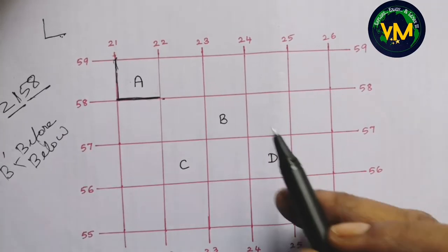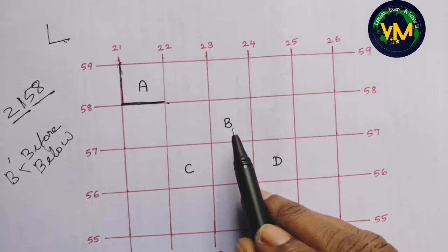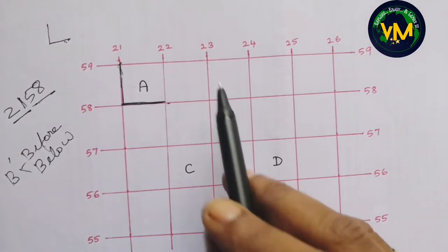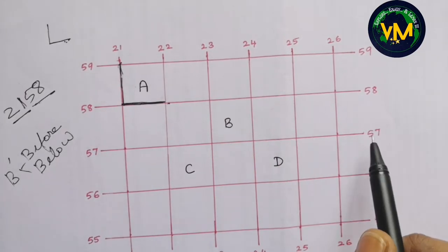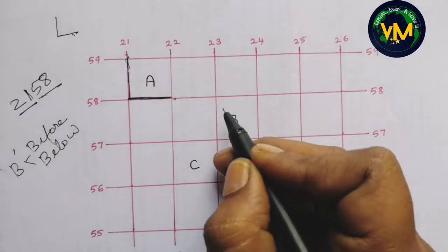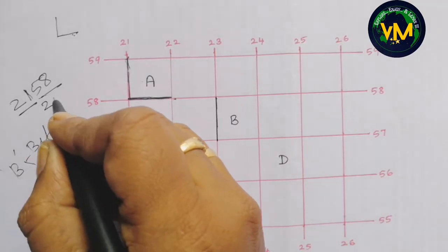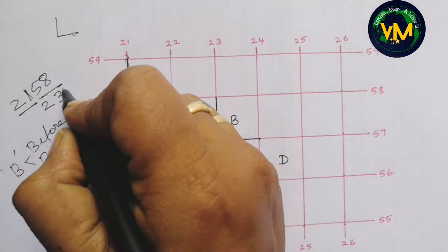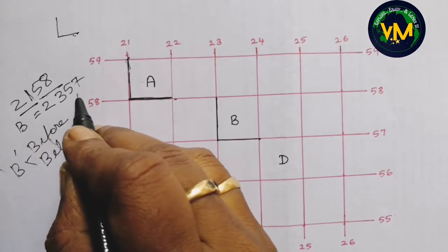Let's try one more example — place B. What is the four-figure grid reference of place B? You can use the before/below rule: the line before is 23 and the line below is 57, so it is 2357. Or use the capital L method: draw the first line — value 23 — then draw the second line — value 57. So the answer for place B is 2357.